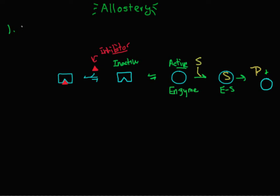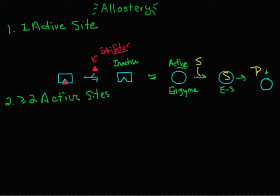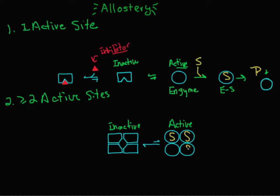This type of allosteric enzyme has one active site. But you can also have allosteric enzymes that have two or more active sites — for example, an enzyme with four active sites. The inactive form does not bind substrate very well, but the active form does bind substrate, and substrate can bind at each of those four active sites, which could then go to products.